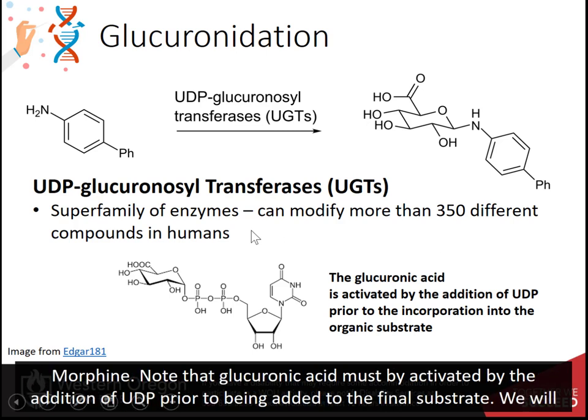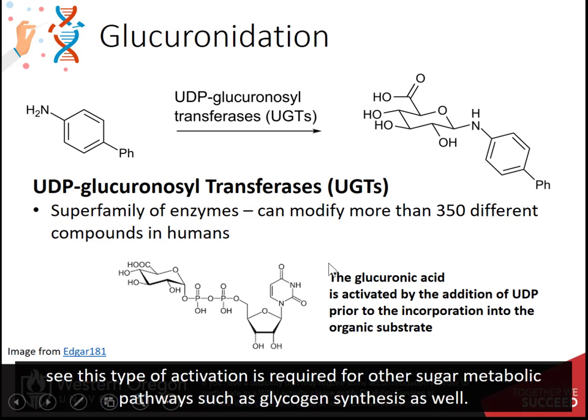Note that glucuronic acid must be activated by the addition of UDP prior to being added to the final substrate. We will see this type of activation is required for other sugar metabolic pathways such as glycogen synthesis as well.